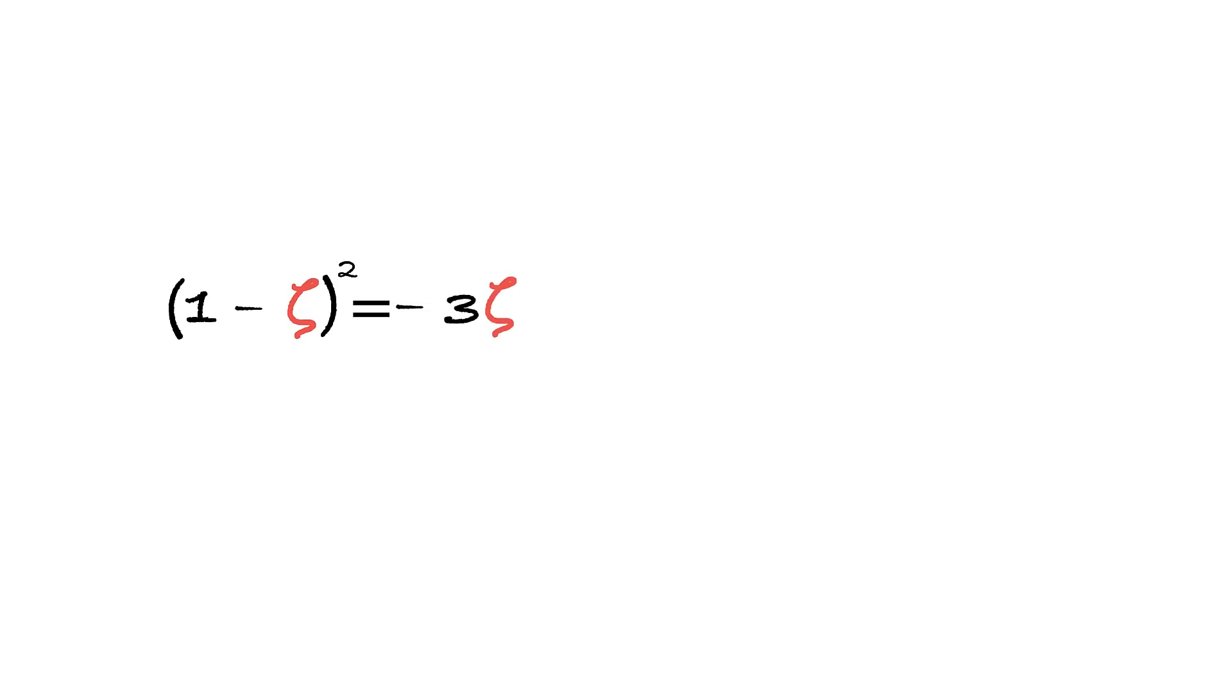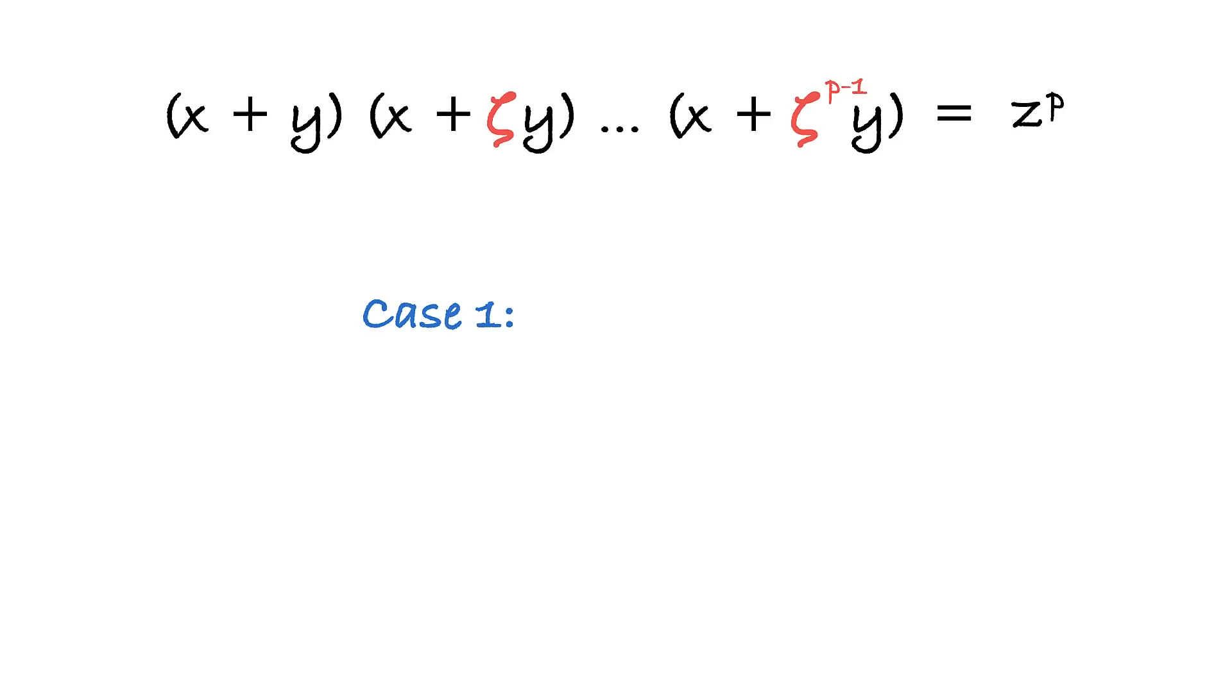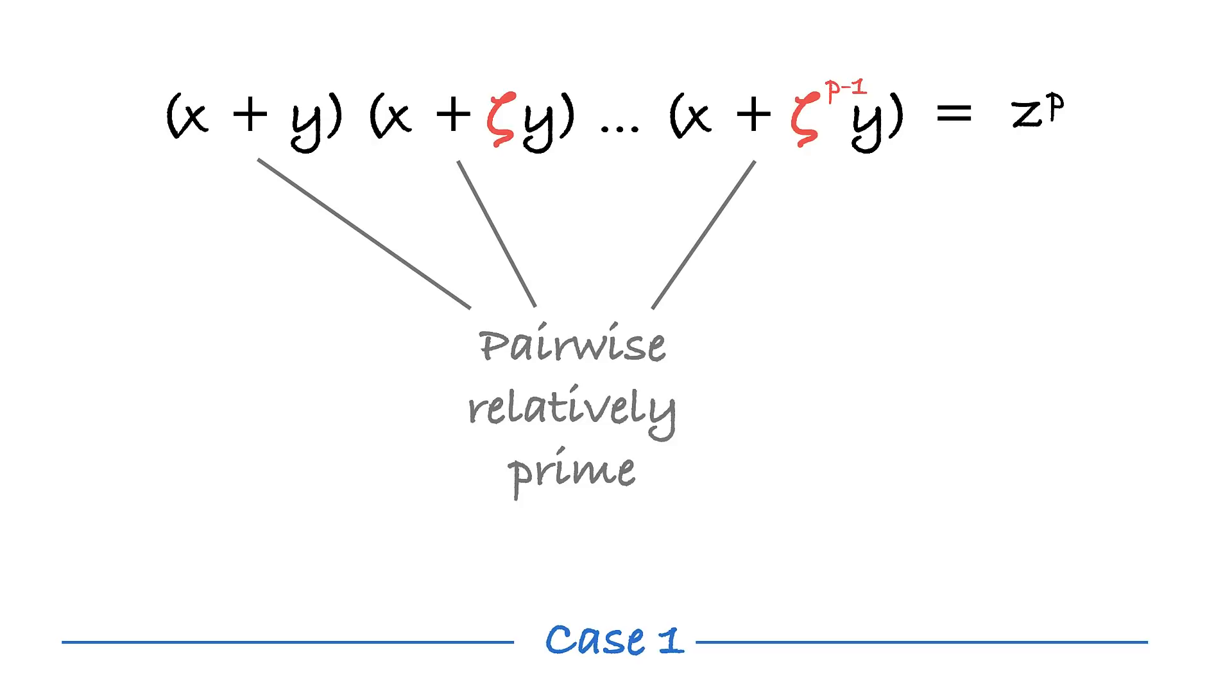Now let's get back to our equation where we left off. The further proof traditionally splits into two cases. Case one is when p does not divide either of the numbers x, y, or z. And case two is when p divides at least one of them.